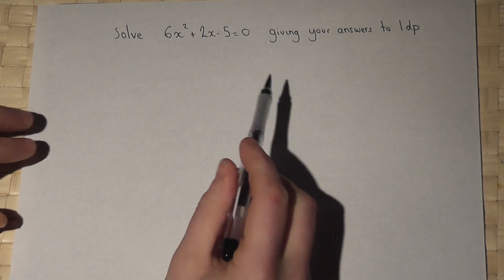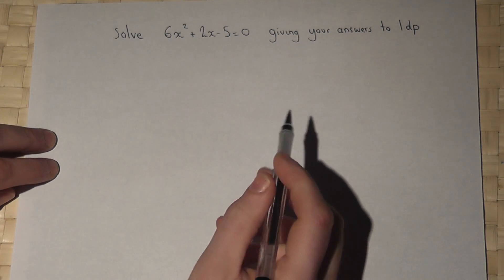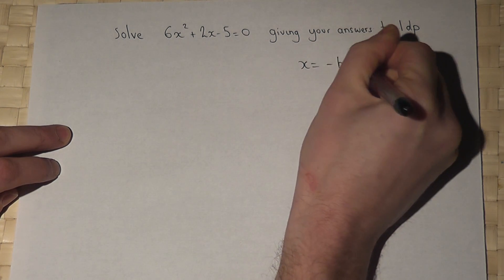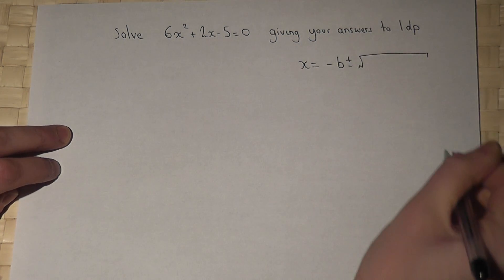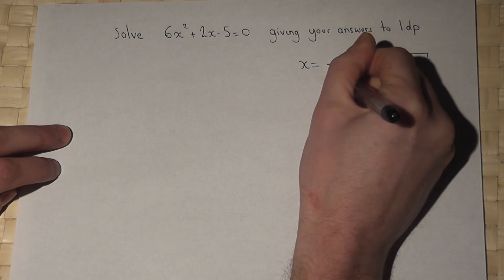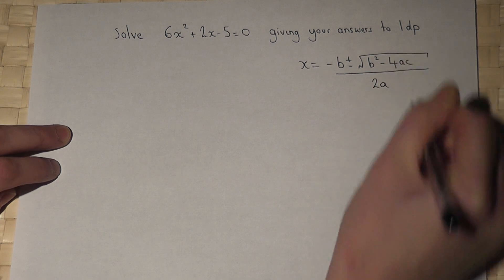To solve this quadratic equation, we will use the quadratic formula, which we know is minus b, plus or minus b squared, minus 4ac, all over 2a.